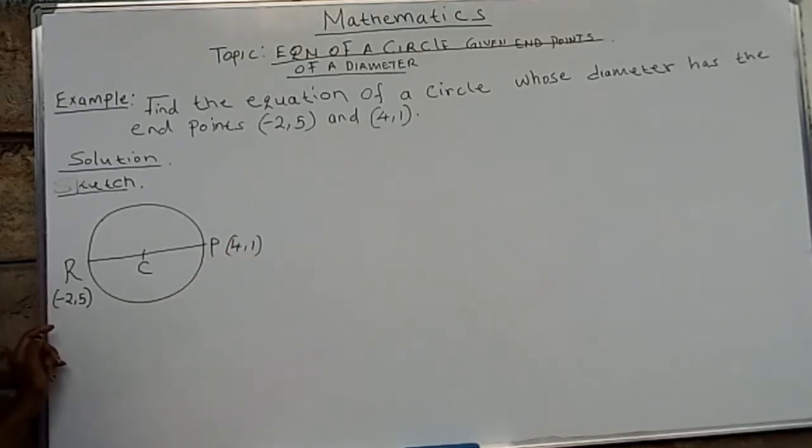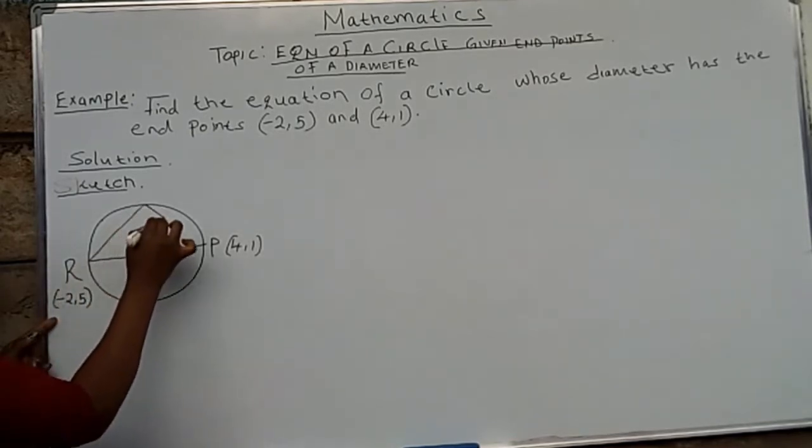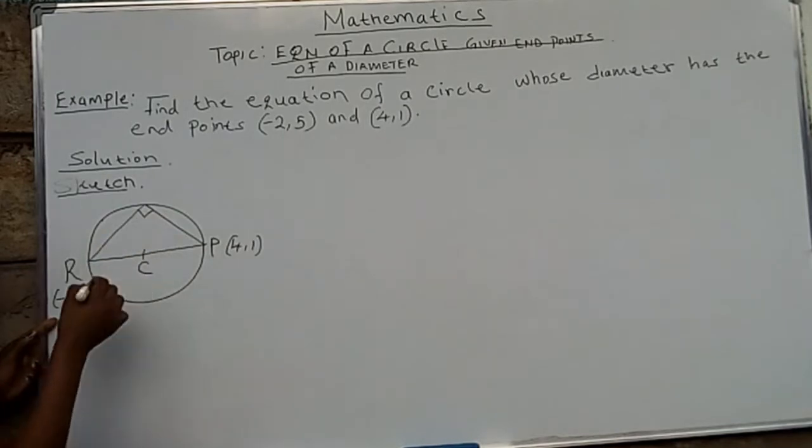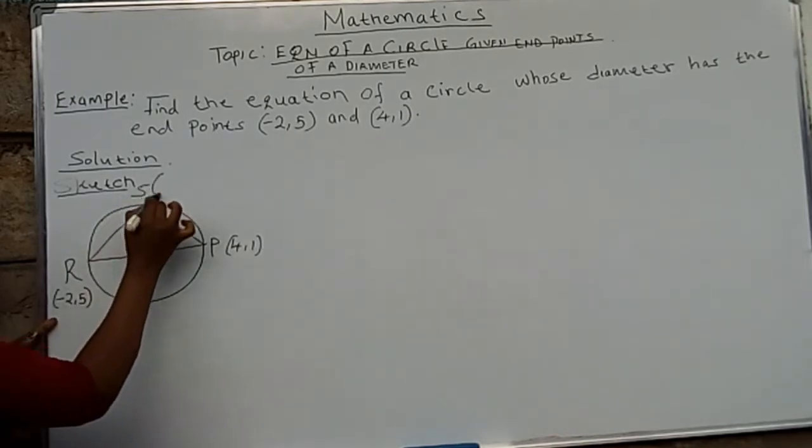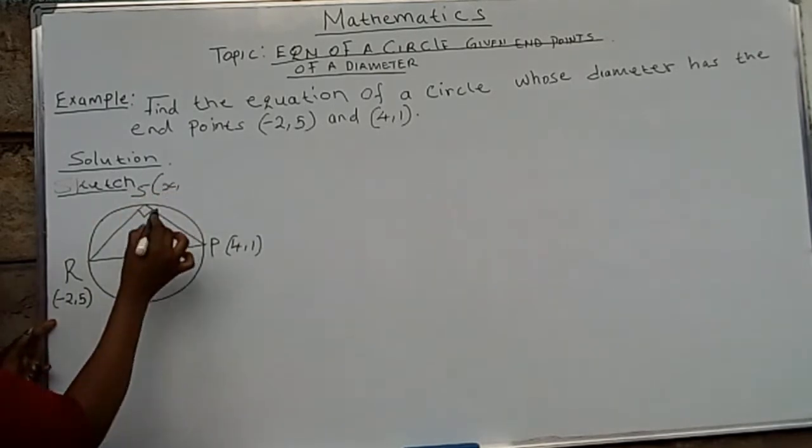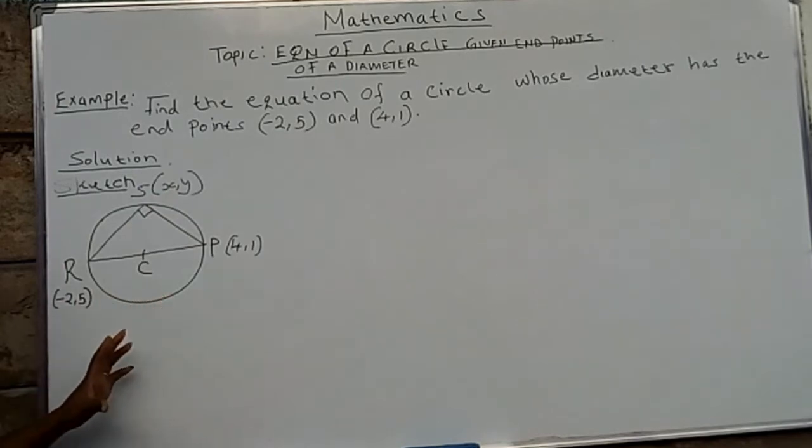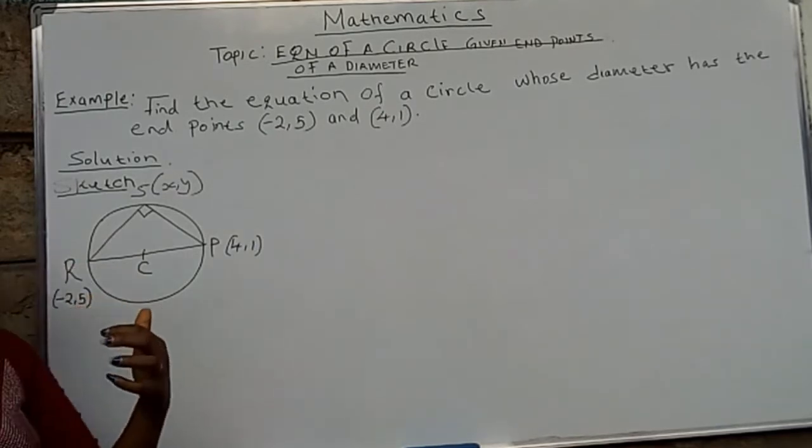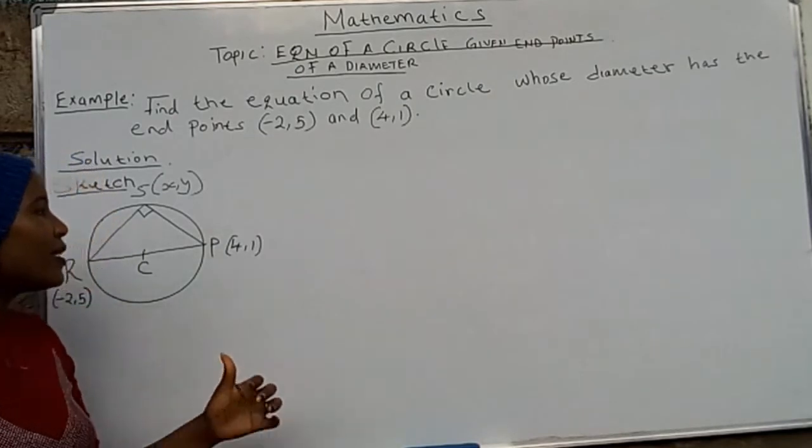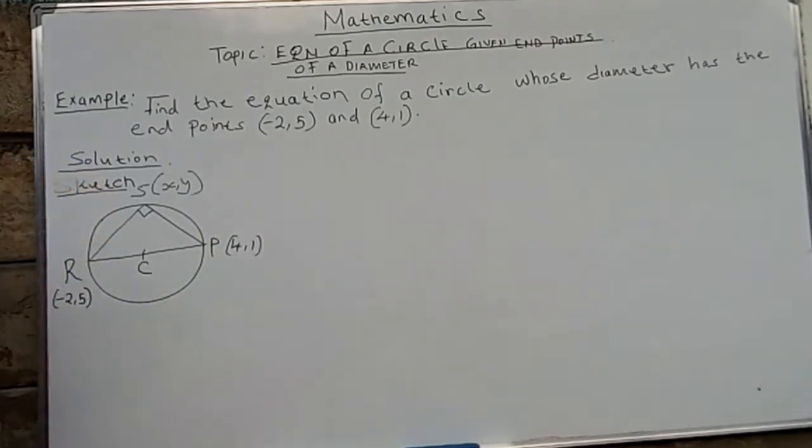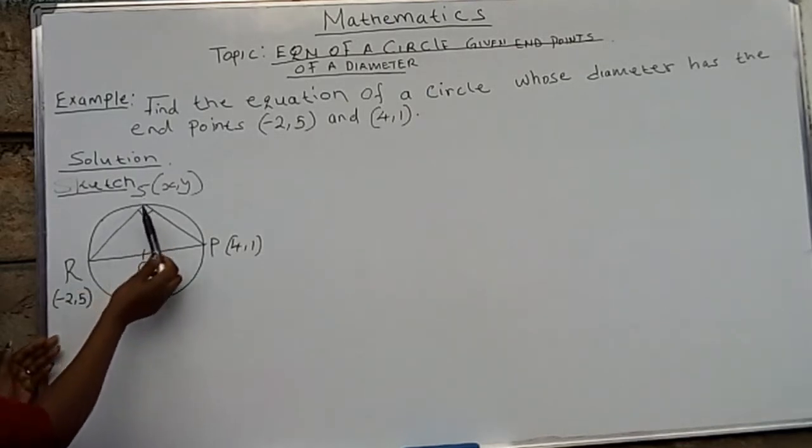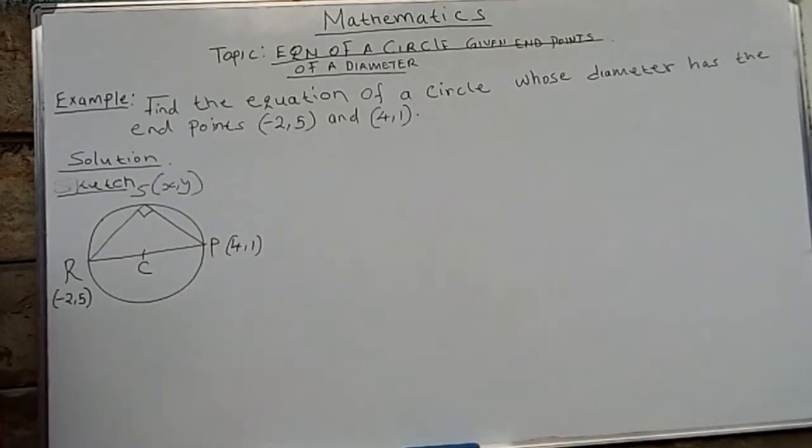Now I want you to remember a topic in Form 2 about angle property of a circle, whereby we say the angle subtended by a diameter is 90 degrees. Maybe this point we can call it S and we can give it an arbitrary point (x, y). Now having that, we can be able to find the equation of this circle by using the idea again of Form 2 work, where we are supposed to find the gradient of these two lines. Since they are now perpendicular, we know the gradient of RS and SP, when we multiply the gradients, we are going to get -1.